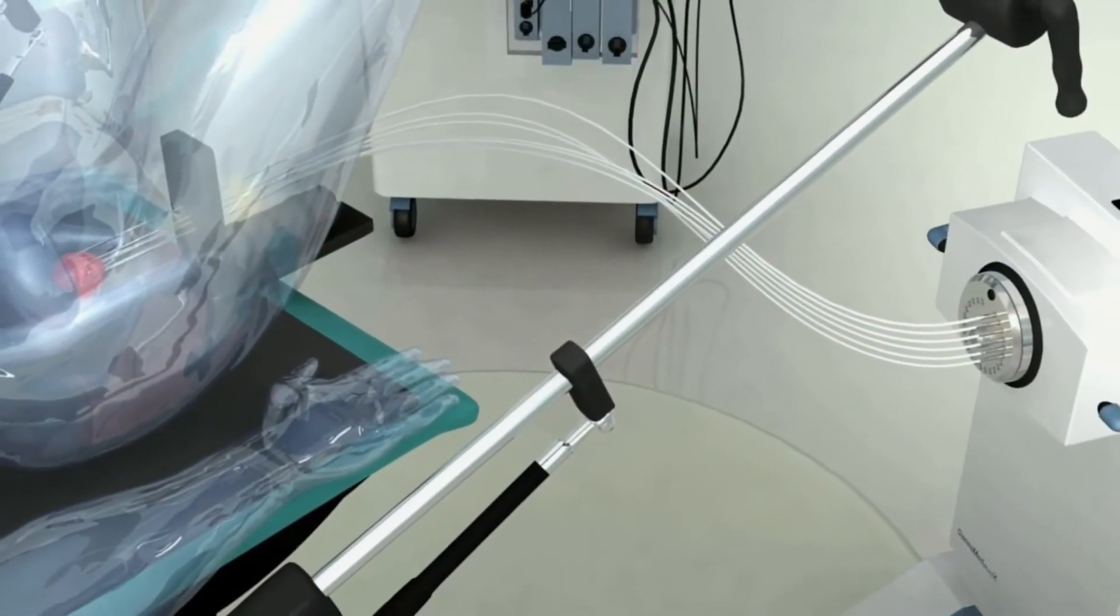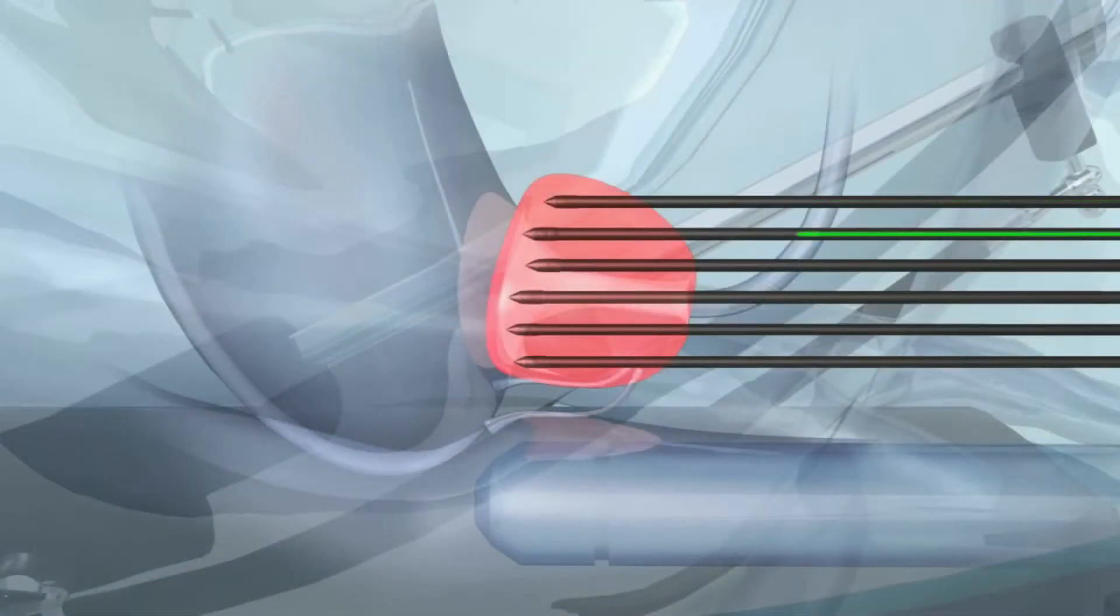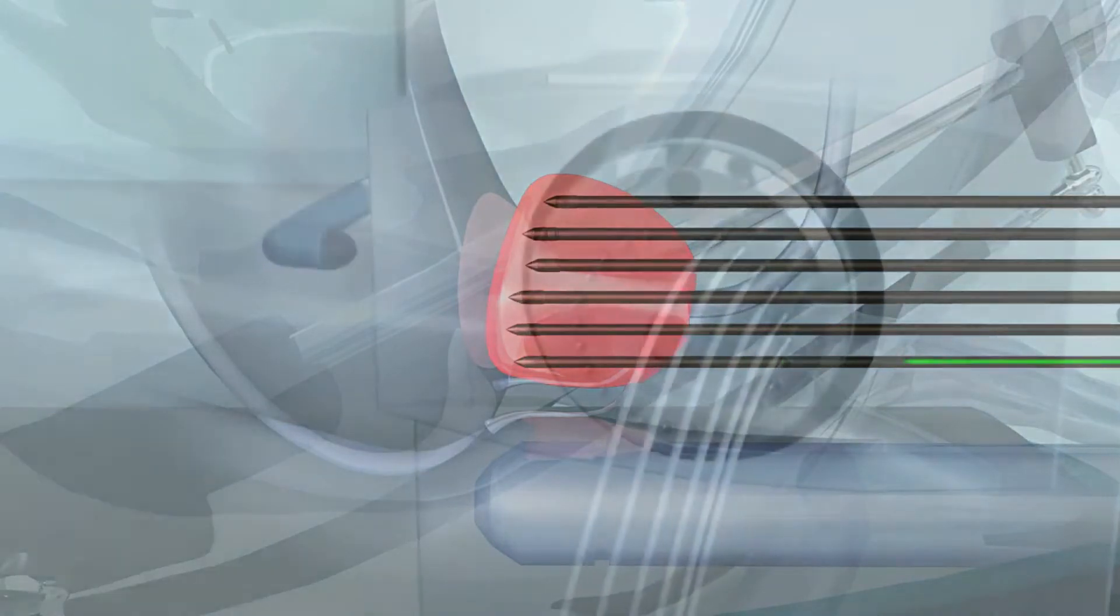Radioactive materials implanted inside or next to the tumor emit a prescribed dose of radiation. Radiation destroys or damages the genetic makeup of cancer cells. Damaged cancer cells can't grow and multiply. Eventually, they die off.